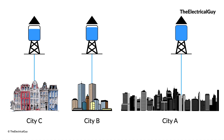Let us understand One Nation, One Grid with a simple example. Let us say we have three big water tanks supplying water to three cities, namely City A, City B and City C. For City A, the water tank is filled 130%. We will consider each city needs 100% water. That means the tank of City A is filled 30% more than what the city needs.